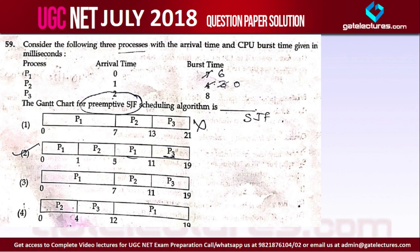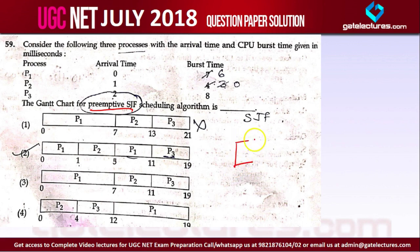Question number 59 is very simple. We are given three processes with arrival time and burst time, and we have to find out the Gantt chart according to preemptive SJFS. Remember, this is preemptive SJFS, which means a process can be preempted if a new process comes with a smaller burst time.